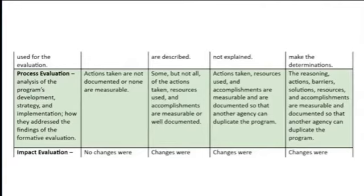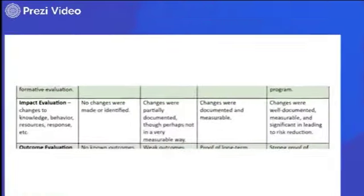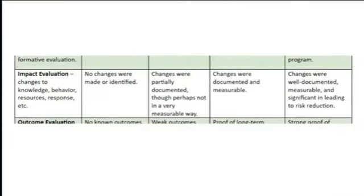If they can do that in a way that someone else could say, 'I could go and get my equivalent of those stakeholders together and do this,' then that's four. If they did most of that, three. Going down to where they just say what actions were taken but it wasn't really measurable — some things have to be counted in order to show your impact. In the process, they need to have things that can be counted or measured in some way — how effective it was or how much they did of it.